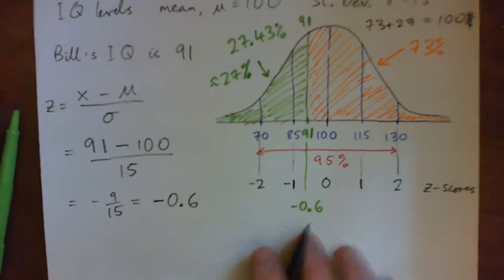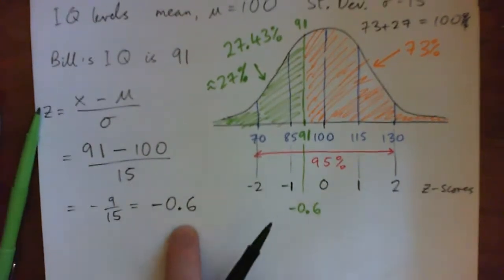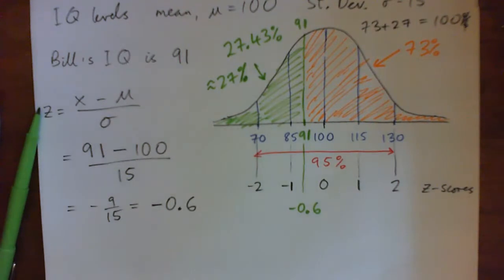Anyway, so that's our Z score. We used that Z score to look up the table, and that gave us the percentages, and I think that answered our question. Let me just check what our question was again. His Z score is negative 0.6, is higher than 27% of the population, is lower than 73%, right? Perfect.